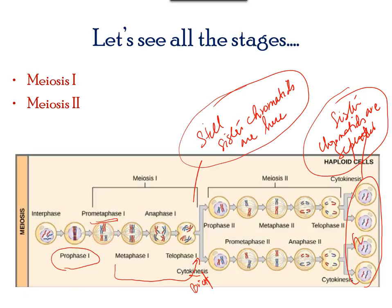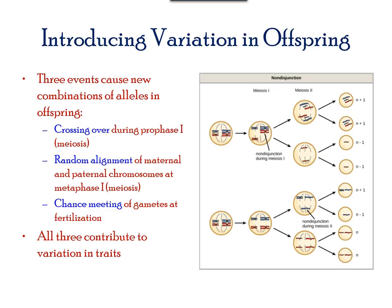To summarize again, three events that are very unique to meiosis are listed here. First, crossing over takes place during prophase I. Secondly, random alignment of chromosomes also takes place during prophase I.